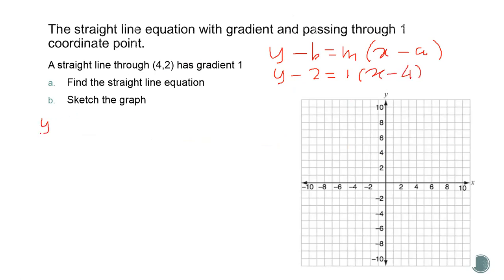Y minus b equals m times x minus a. And this equation is going to be y equals, move the negative to move to the right side, when x minus 4 plus 2. And this equation becomes y equals x minus 2.